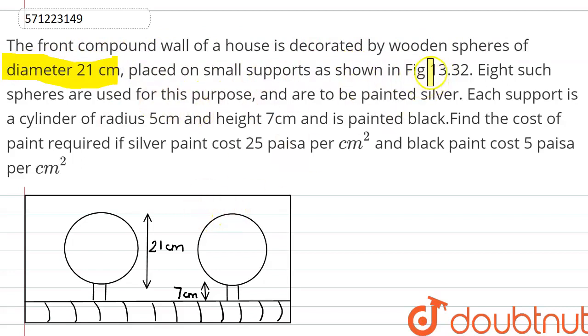Eight such spheres are used for this purpose and are to be painted silver. Each support is a cylinder of radius 5 cm and height 7 cm and is painted black. Find the cost of the paint required if the silver paint cost 25 paisa per cm² and black paint cost 5 paisa per cm².